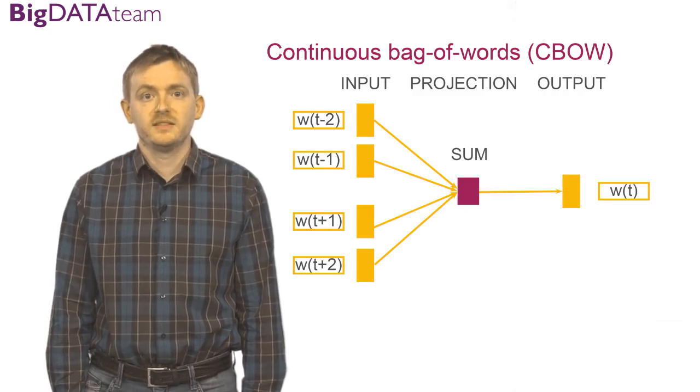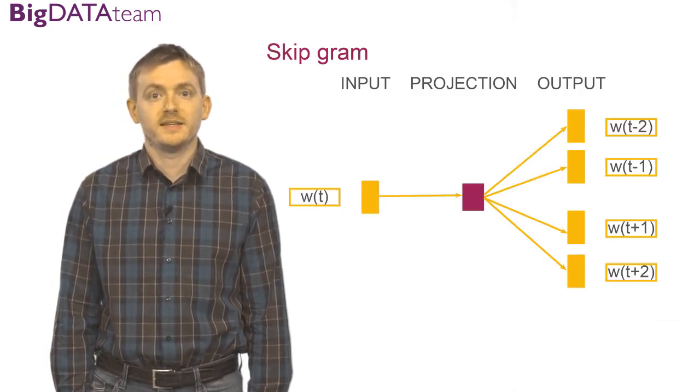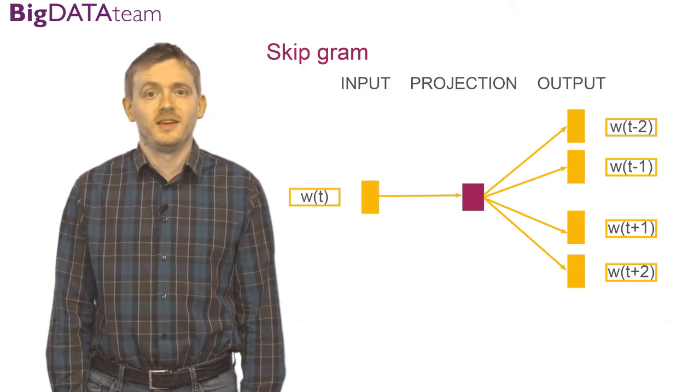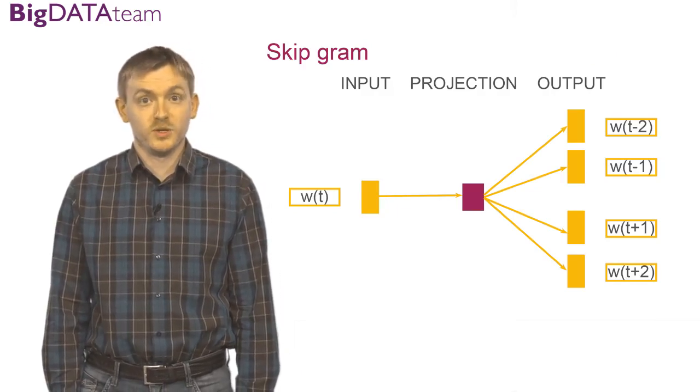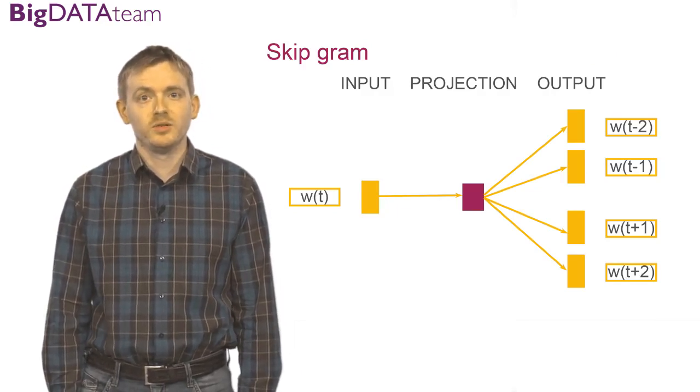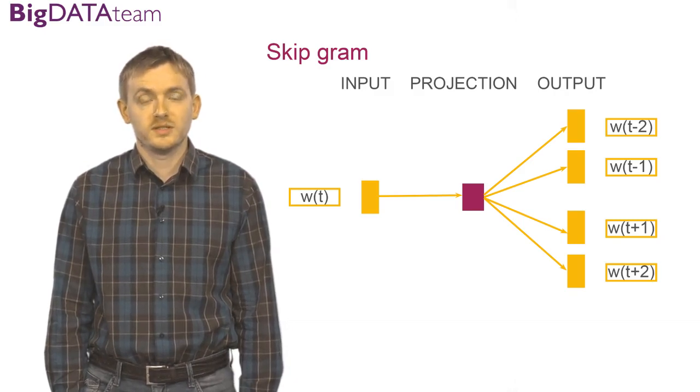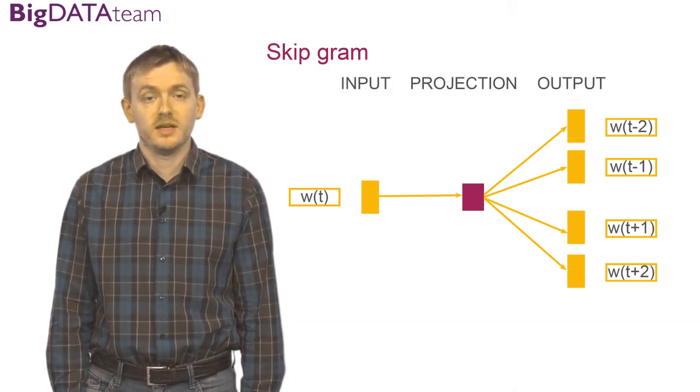The second statistical model is called a skip-gram model. In contrast to the previous case, the model predicts surrounding words based on the word in the center.